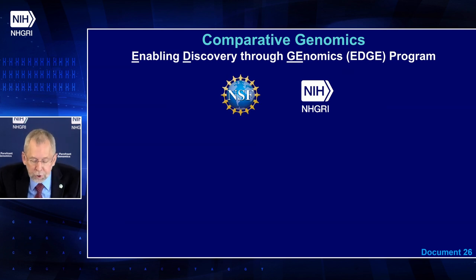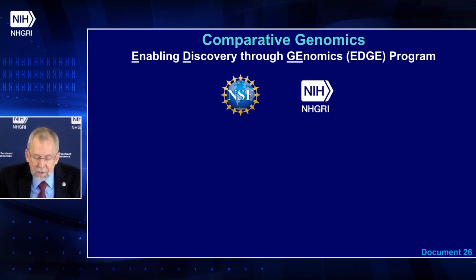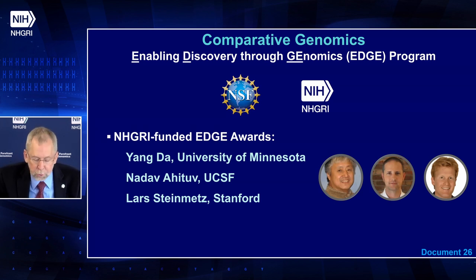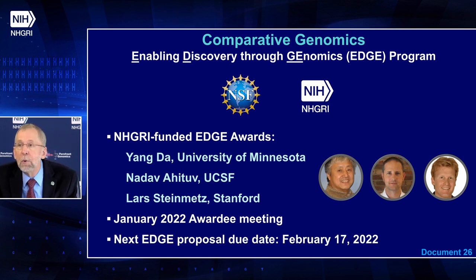As highlighted in the 2020 NHGRI strategic vision, the Institute recognizes that comparative genomics is an important tool for maximizing our understanding of genome function. Therefore, NHGRI has signed on to the National Science Foundation-led Enabling Discovery Through Genomics, or EDGE, program — a multi-agency initiative supporting development of innovative tools, technologies, resources, and infrastructure advancing biological research focused on identifying causal mechanisms connecting genes and phenotypes. As part of the new partnership, NHGRI recently made three awards, and the investigators joined the larger EDGE network at the annual meeting held in late January. The next EDGE proposal due date is February 17th of this year.